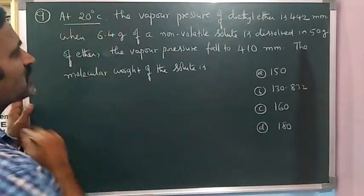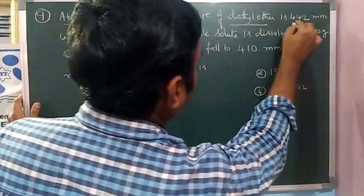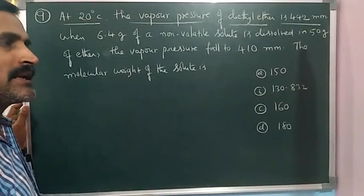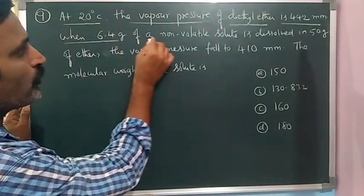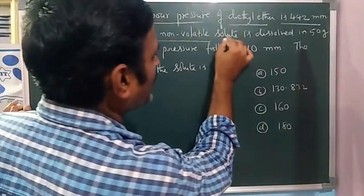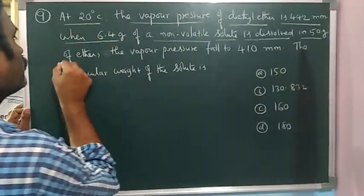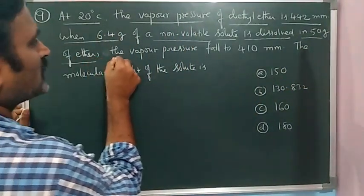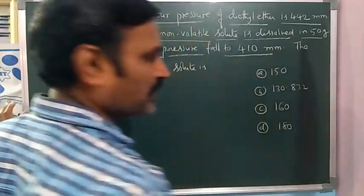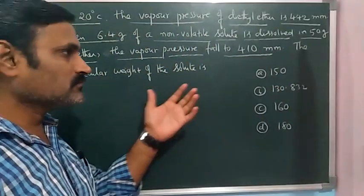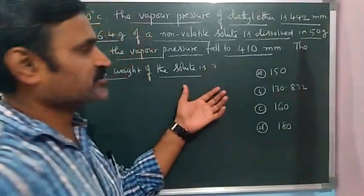At 20 degrees Celsius, the vapor pressure of diethyl ether is 442 millimeters Hg. When 6.4 grams of a non-volatile solute is dissolved in 50 grams of ether, the vapor pressure falls to 410 millimeters Hg. The molecular weight of the solute is how much?